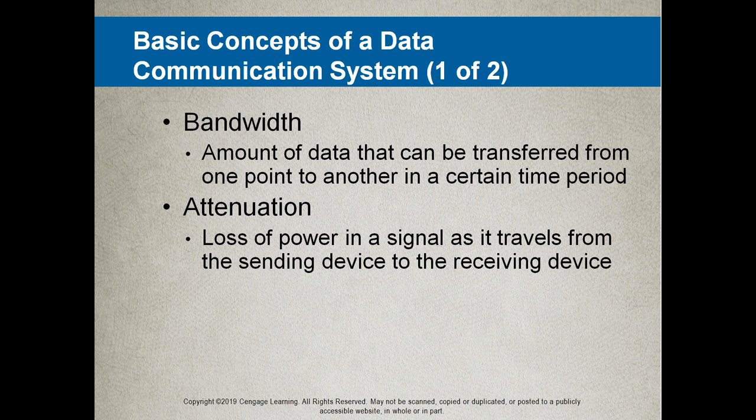Attenuation is the signal getting weaker and weaker as it travels. So if you and your friend are standing on opposite hills far apart, because of the distance there's a lot of attenuation between you. You have to shout very loudly so that your friend can still hear you, even with all the signal loss between the two hills.